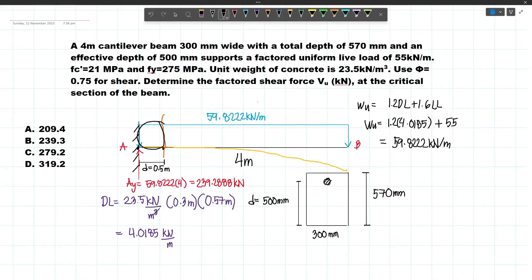Next, we have to solve for the resultant because we will subtract that from AY to get the shear at this point. The shear at this point, VU or the factored shear force, equals 239.2888 minus the resultant of this portion. This resultant equals 59.8222 times this distance which is 0.5 meters.